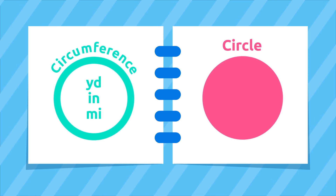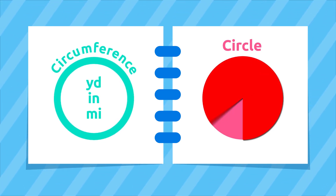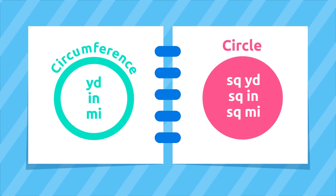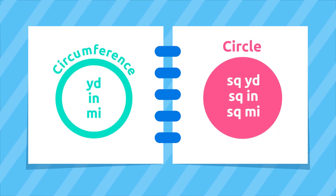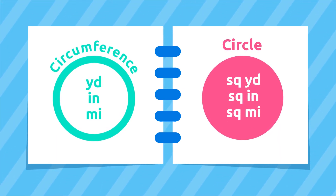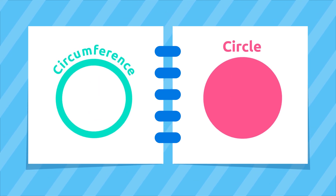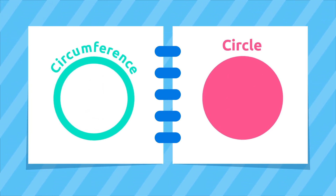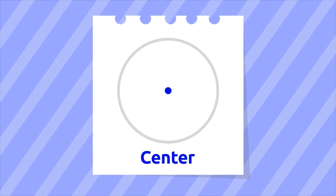However, the circle is a plane figure — that's why we measure its surface in square yards, square inches, or square miles. We can distinguish the following elements in a circumference and a circle. The center is the point from which all the points of the circumference are the same distance.